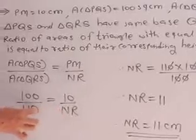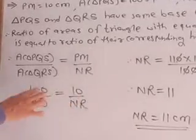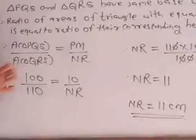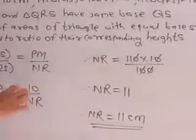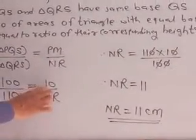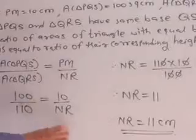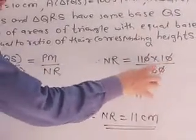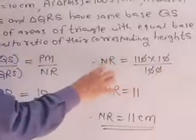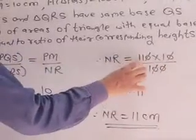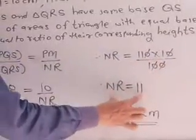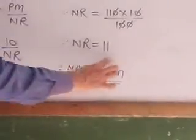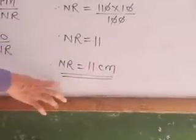PM upon RN: given 100 upon 110 equals 10 upon RN. Cross multiplying: RN equals 110 into 10 upon 100. The two zeros cancel, giving RN equals 11 into 1. So RN equals 11. Therefore the answer is RN equal to 11 centimeters.